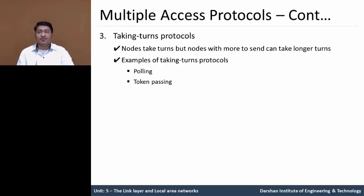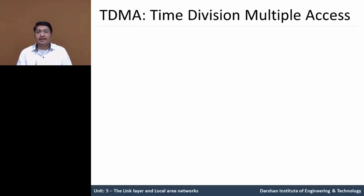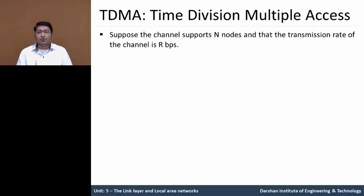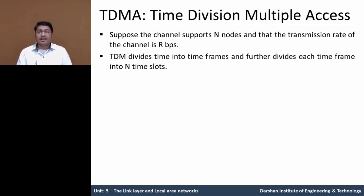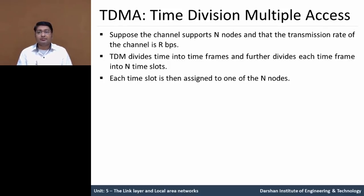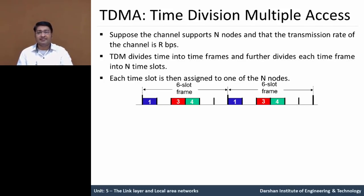Let us understand the first multiple access protocol: TDMA, Time Division Multiple Access. Suppose the channel supports N nodes and the transmission rate is R bits per second. The TDMA protocol divides time into time frames and further divides each time frame into N time slots based on the particular time frame. Each time slot is then assigned to one of the N nodes. Let us take an example.